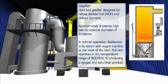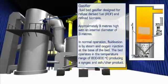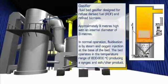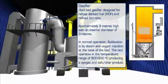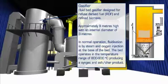To give you a sense of scale, the gasifier is approximately 9 meters high and has an internal diameter of around 3 meters. In normal operation, the gasifier's sand bed is fluidized by steam and oxygen injected through nozzles at the base of the bed, so as to maintain a starved air atmosphere inside the gasifier. Refuse-derived fuel or RDF feedstock is fed into the gasifier slightly above the bed and is quickly converted into a syngas that leaves from the top of the gasifier.